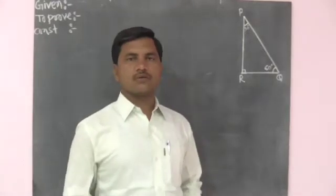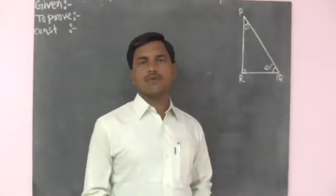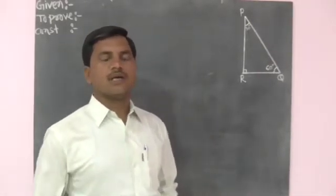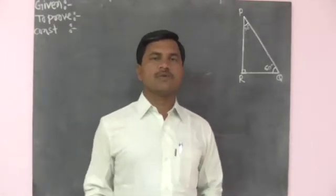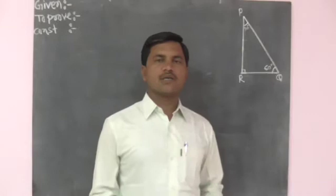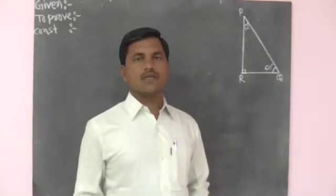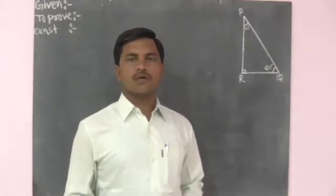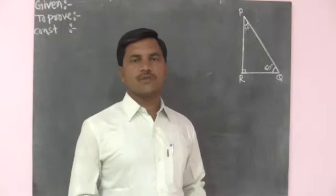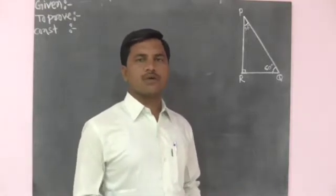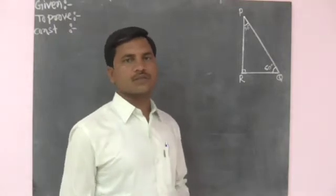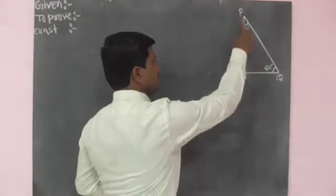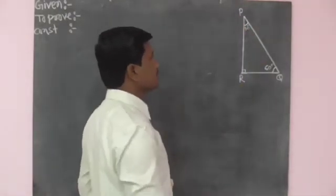Hello friends, we are going to see the next theorem in similarity: the theorem of the 30-60-90 degree angle. The statement of the theorem is: if the measures of angles of a triangle are 30 degrees, 60 degrees, and 90 degrees, then the measure of the side opposite to the 30 degree angle is half of the hypotenuse, and the measure of the side opposite to the 60 degree angle is root 3 upon 2 times of the hypotenuse.